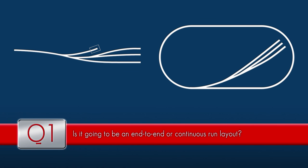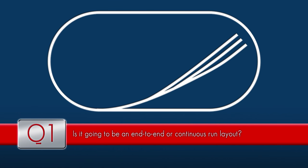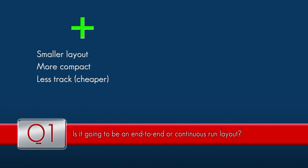While some people swear by end-to-end layouts, others insist that continuous run is the way to go. End-to-end is as the name suggests — you run trains from one end of the layout to the other. Continuous run is also as the name suggests: essentially a loop where trains can complete a lap and keep going. Advantages of the end-to-end layout include allowing for a smaller, more compact layout — generally narrower, less track is needed, which can mean they're cheaper.